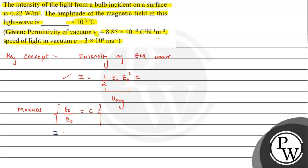Let's look at the answer. The intensity value given is 0.22 watt per meter squared. We are asked to find the amplitude of the magnetic field B₀. First, let's eliminate E₀ to find B₀.